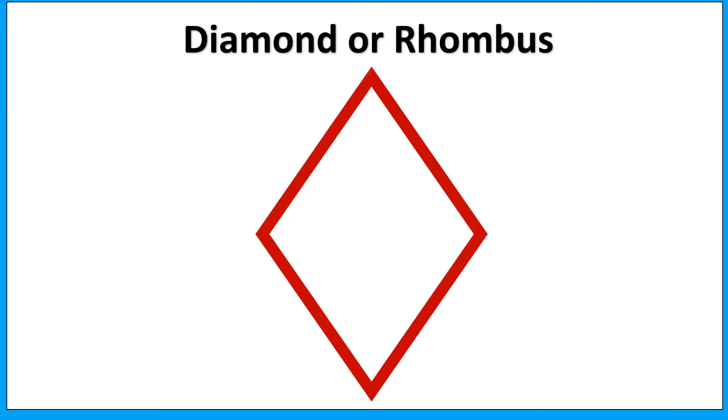This is a diamond. It has four sides. Its all sides are equal. Side 1, side 2, side 3, side 4. It has four corners.